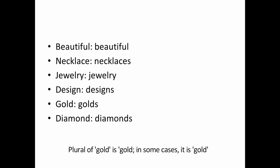The answers: beautiful — it is an adjective; beauty is an abstract noun and cannot become beautifuls. Necklace — one necklace, several necklaces, so necklaces is the plural. Jewelry — remains jewelry, not jewelries. Design — one design, several designs; yes, that is countable. Gold — golds; diamonds — diamonds. Yes, certain words referring to metals can be turned into plural forms.